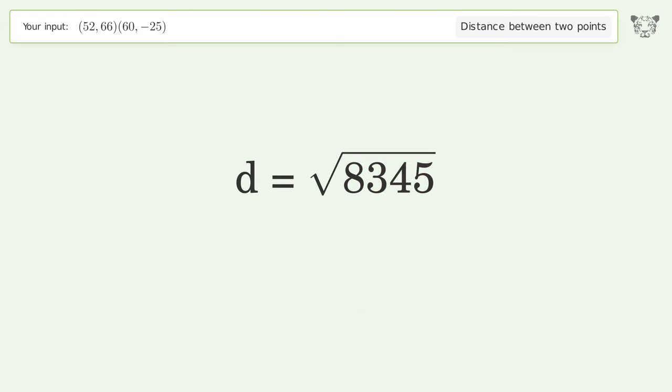And so the distance between the two points is the square root of 8,345 or 91.351.